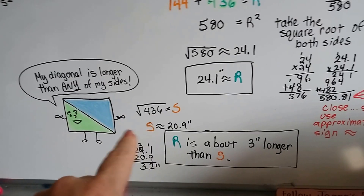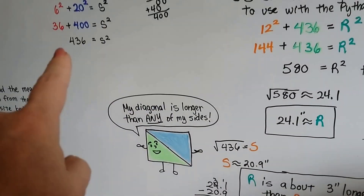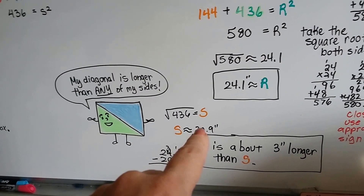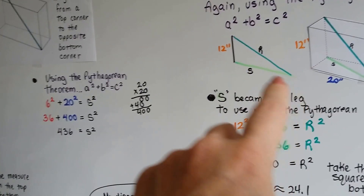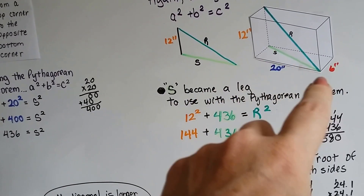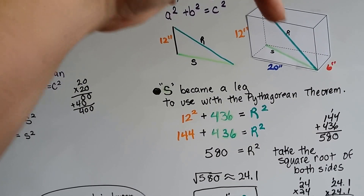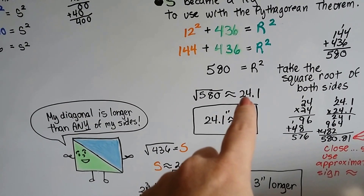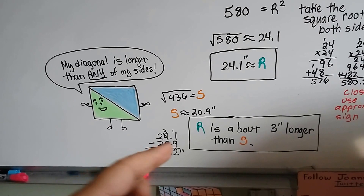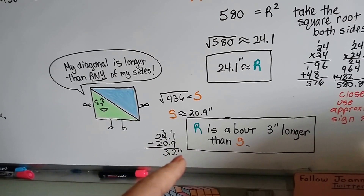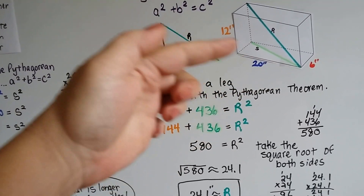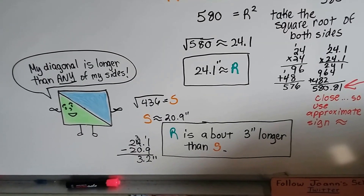If you look at the square root of 436, it comes out to approximately 20.9. So if we laid something along the bottom diagonal, we could lay a 20.9-inch stick diagonally across the bottom of the box. But if we laid the stick going from up here down to the front corner, we could fit a 24.1-inch stick — the difference is 3.2 inches. I could lay a 3.2-inch longer stick in that box by going along this diagonal than just laying it across the bottom. R is about 3 inches longer than S. The diagonal is longer than any of the sides.